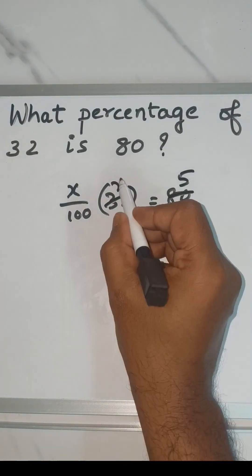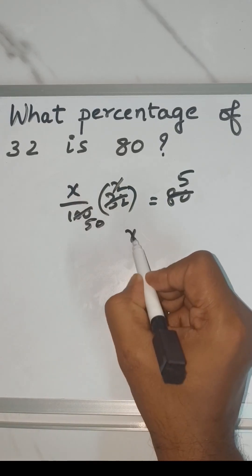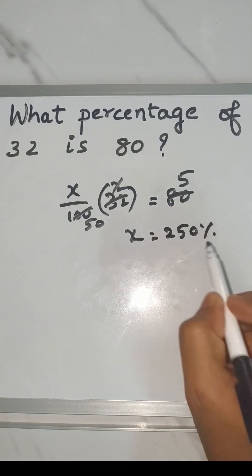So 16 2's, 16 5's, 2 1's are, 2 50's are. So x is 5 into 50 which is 250%.